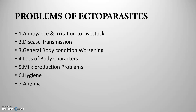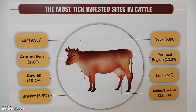The most tick-infested sites in cattle are: ear region at 9.9%, around the eyes at 10%, dewlap region at 10.2%, brisket at 6.5%, udder and scrotum at 12.5%, tail at 5.5%, perineal region at 12.2%, and neck at 6.8%. These figures are based on scientific studies and are tentative — they will not be the same for every cattle breed or location.